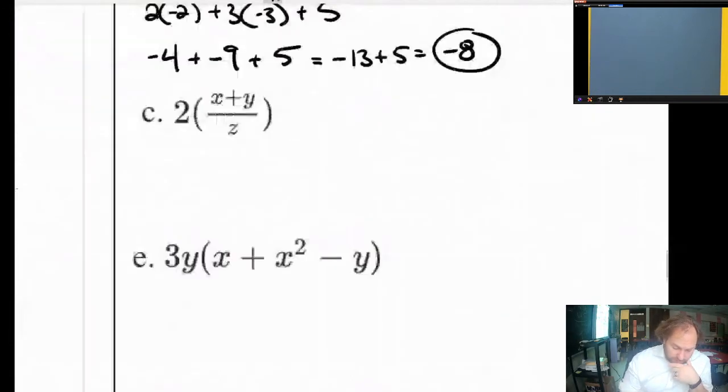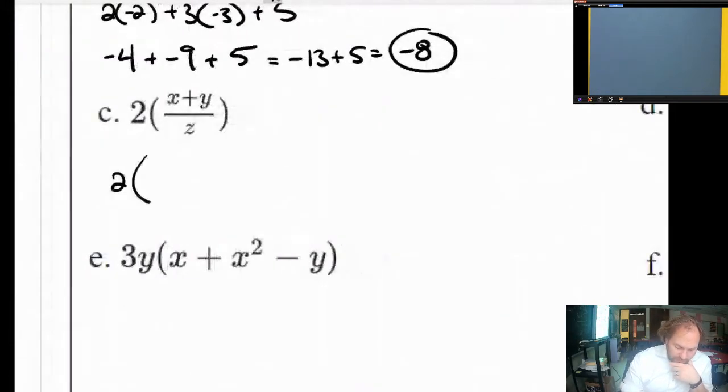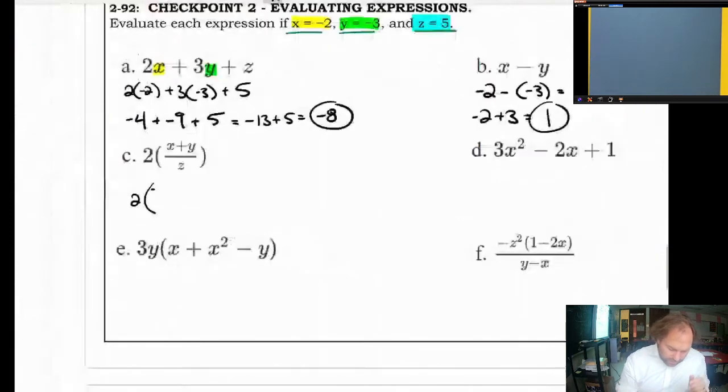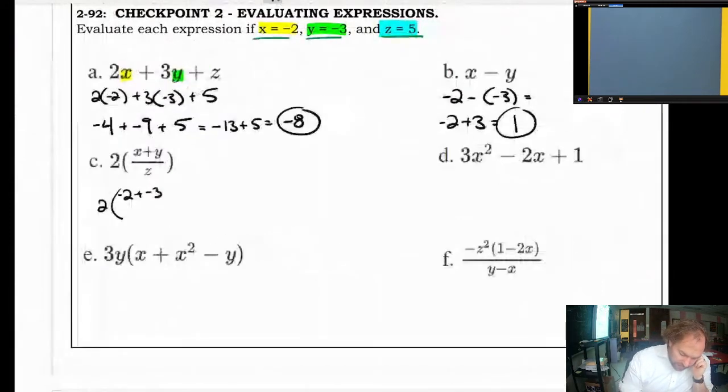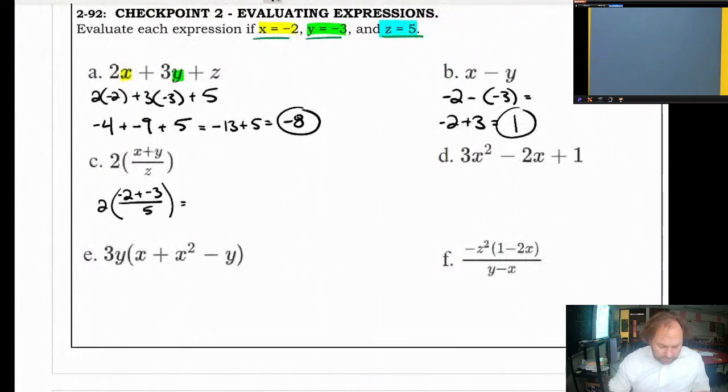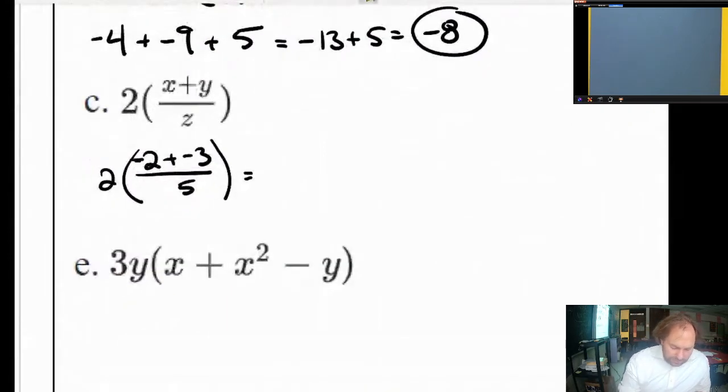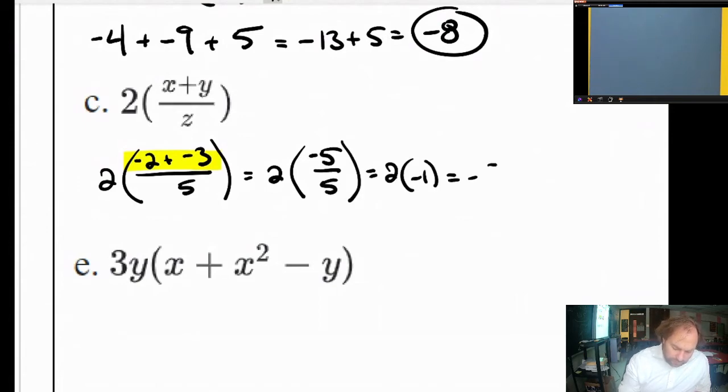This question down here, this is going to be 2 times in parentheses negative 2 plus negative 3 on top of the fraction divided by 5. Remember that when you're dealing with fractions like this, there's kind of an implied parentheses around the top of the fraction. I wanted to use a highlighter there. It's kind of an implied parentheses there. So you're going to have 2 times in parentheses will be negative 5 over 5. In other words, 2 times negative 1, which is negative 2. That's the answer.